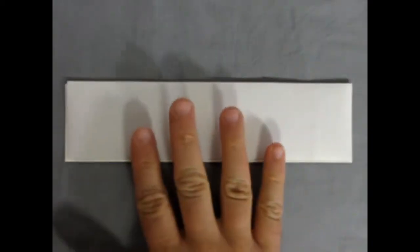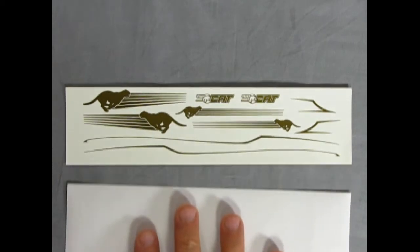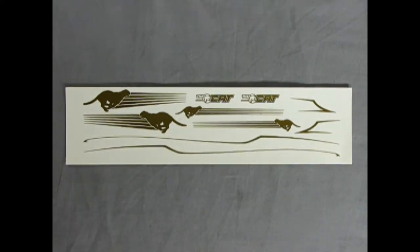Last but not least we have this amazing decal sheet. And look at that nice gold on here. This says the cat. And then it has all these different cougars running. And this would look really great if you painted your car black much like this earlier box art shown here.